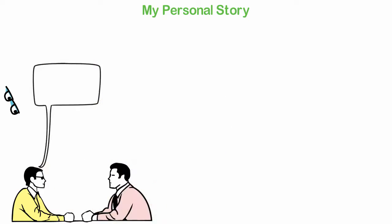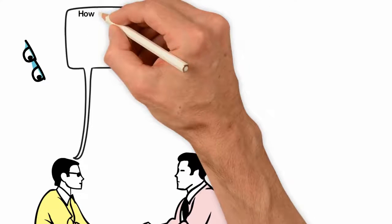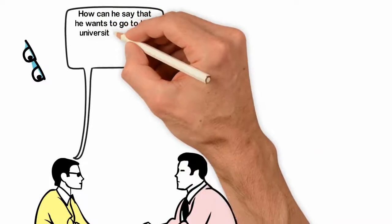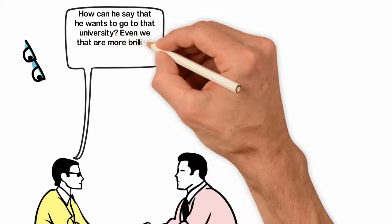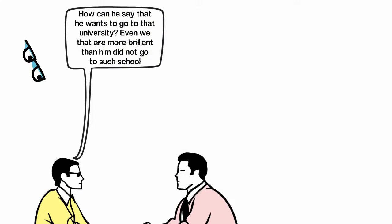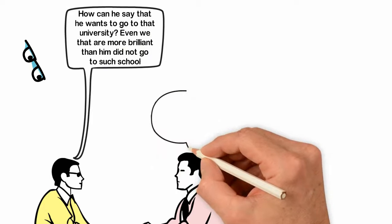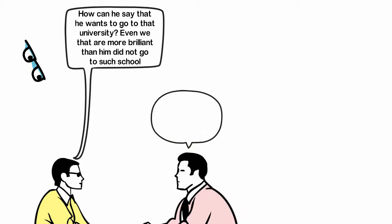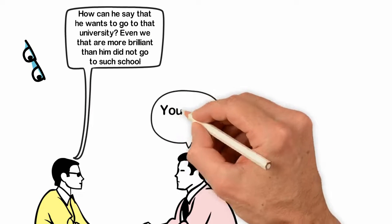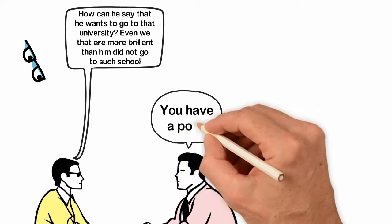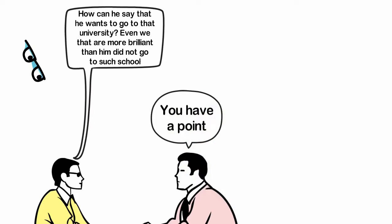I heard my blood brother telling them, how can he say that he wants to go to that university? Even we that are more brilliant than him did not go to such school. In the end, everyone concluded that I was not going to be allowed to go to that university. Instead, I was forced into a lower school, a polytechnic.